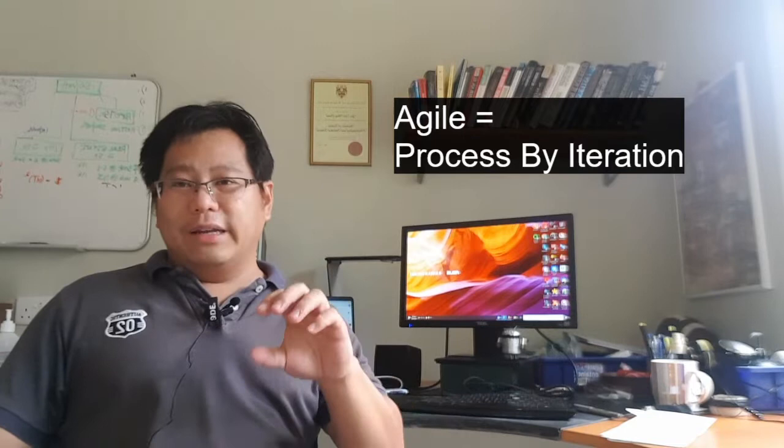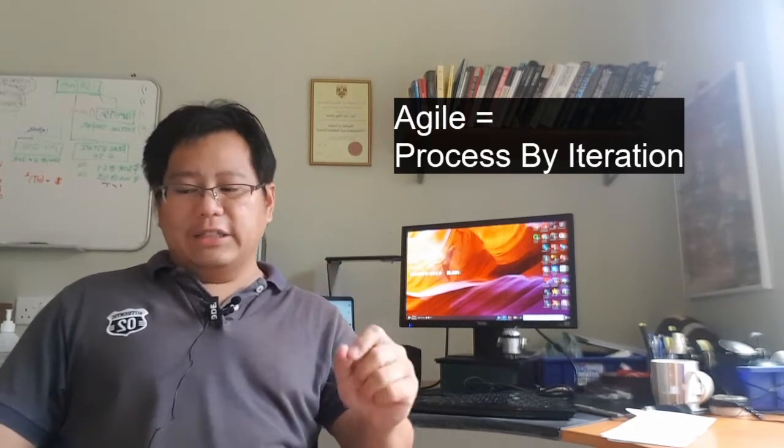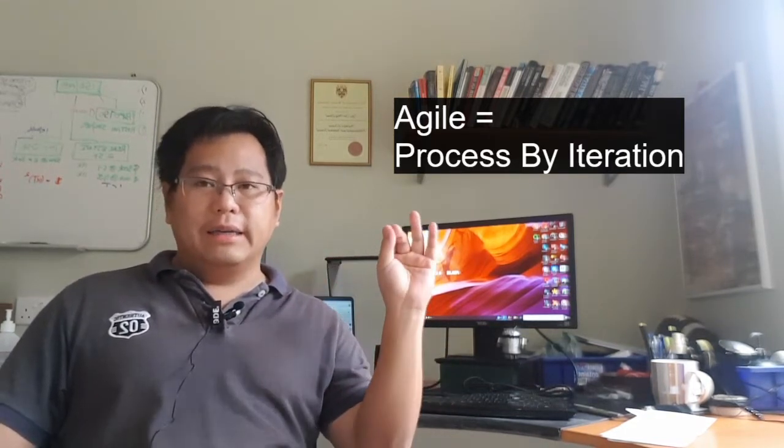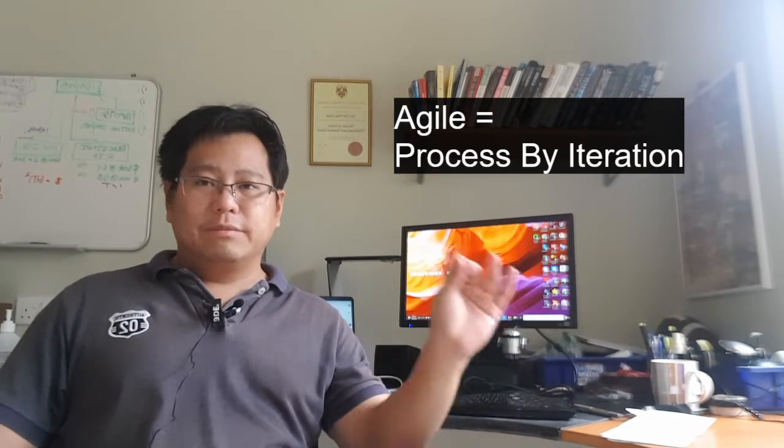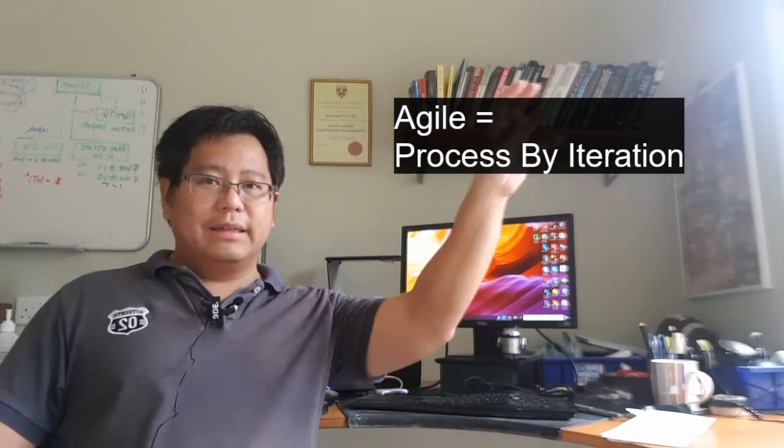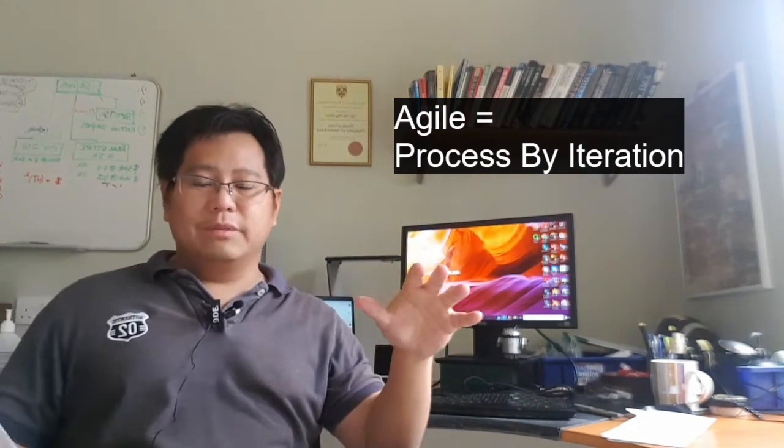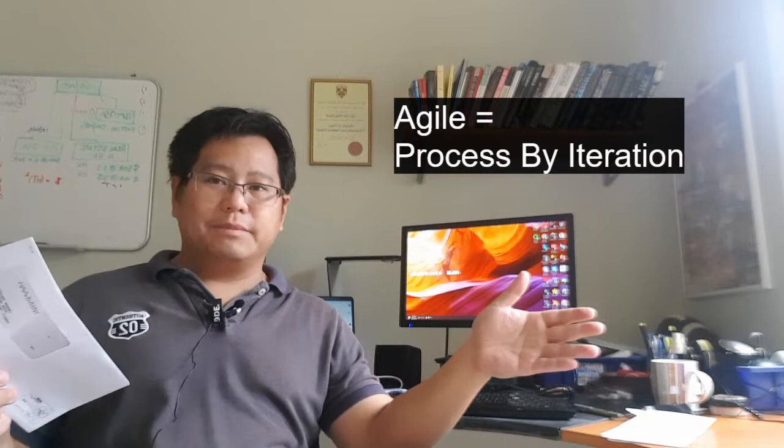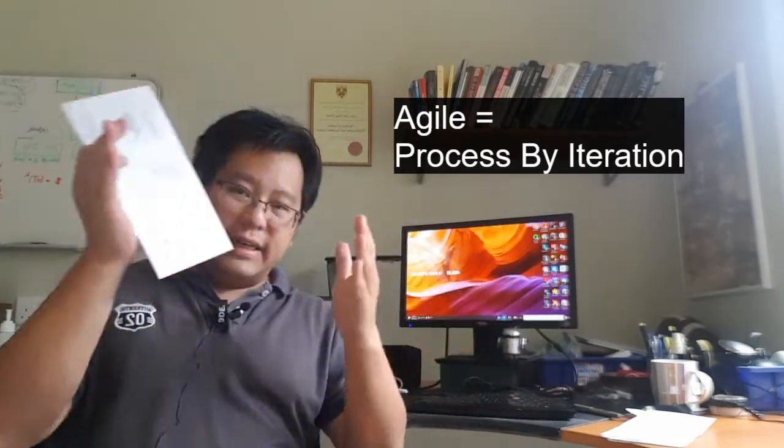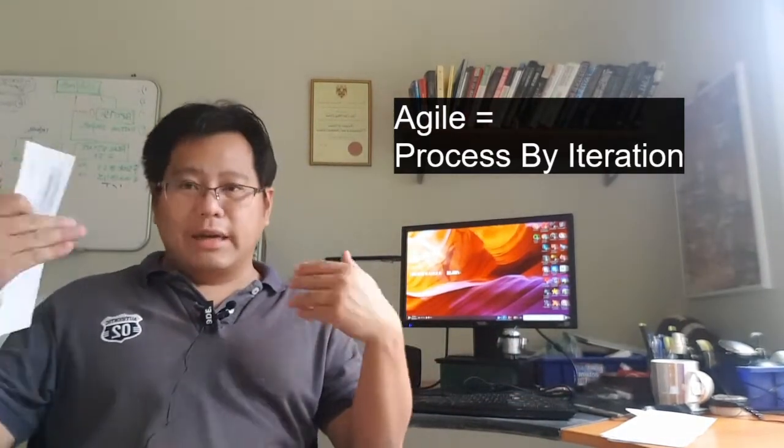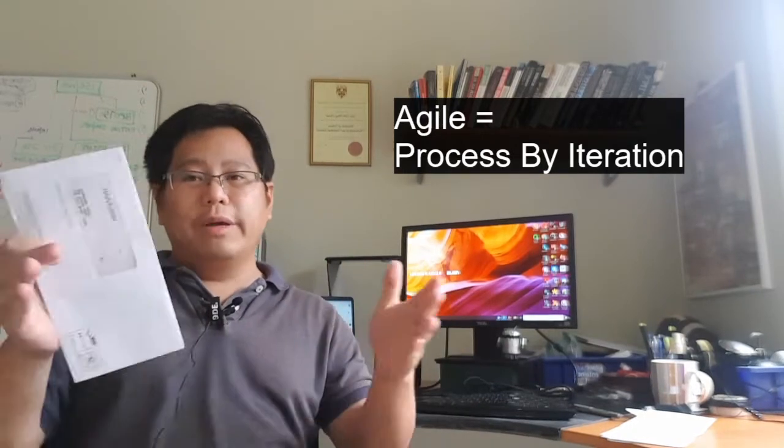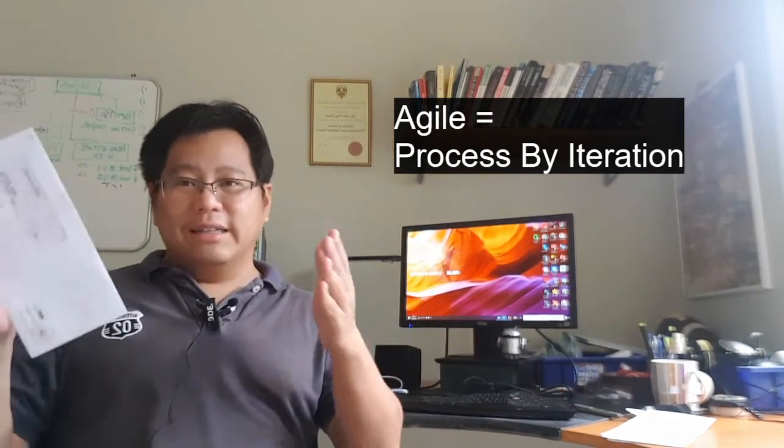So breaking down what Agile is, Agile is process by iteration. What does this mean? Simple trial by error. Getting something out, testing it, fixing it, coming back again. And where is this trial happening? It's not happening in the sample area. It's happening in the live production market or the real market.